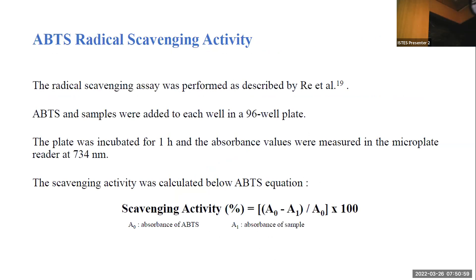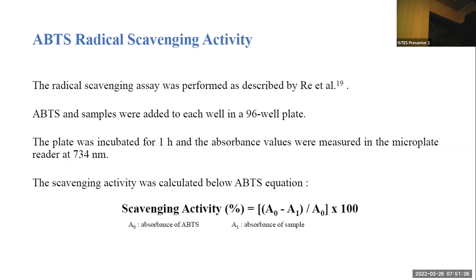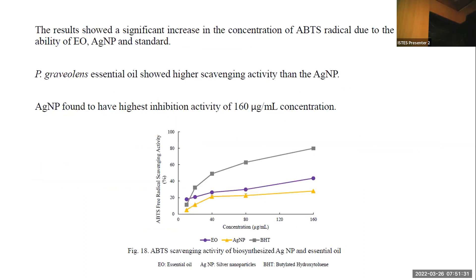ABTS radical scavenging activity was performed as described by Re et al. ABTS and potassium persulfate were prepared. The solution was incubated in a magnetic stirrer. Samples were prepared at different concentrations. Solution and samples were added to wells in a plate; the plate was incubated and absorbance was measured in a microplate reader. Scavenging activity was calculated using equations. Silver nanoparticles were found to have high ABTS inhibition activity at 160 mcg/ml concentration.